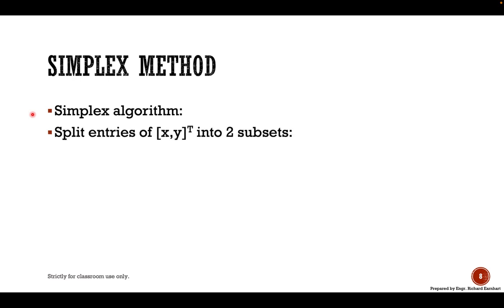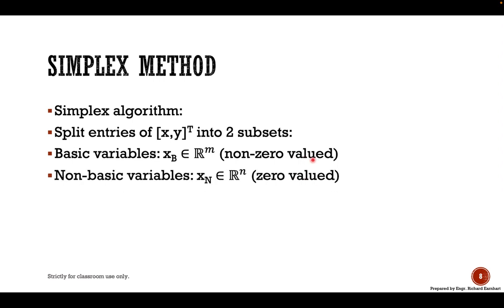This is how the simplex algorithm works. You split the entries of the vector (x,y)^T into two subsets, this is a column. We have the basic variables represented by x_B which belongs to R^m, which is non-zero valued or non-vector, and then we have the non-basic variables x_N which belongs to R^n. This represents a corner point of the feasible region.